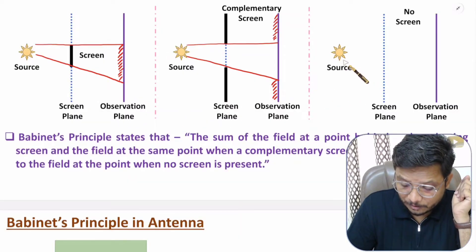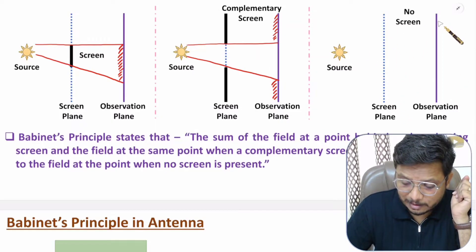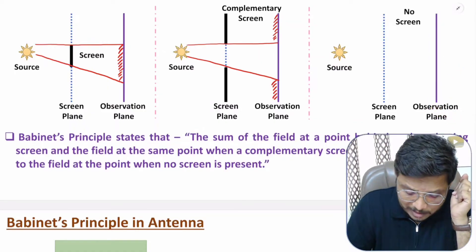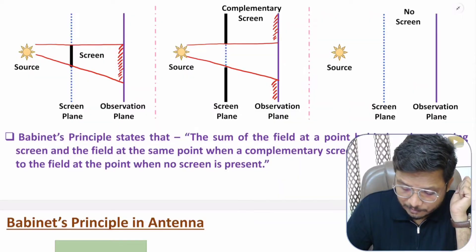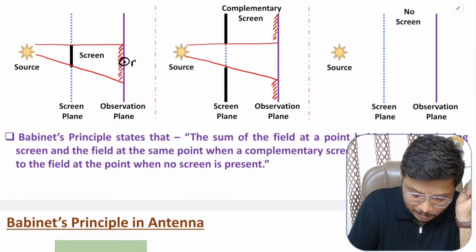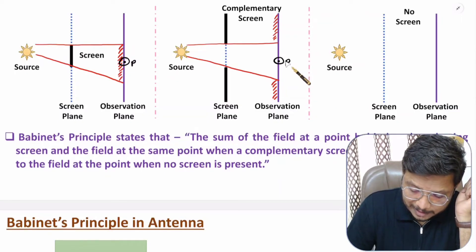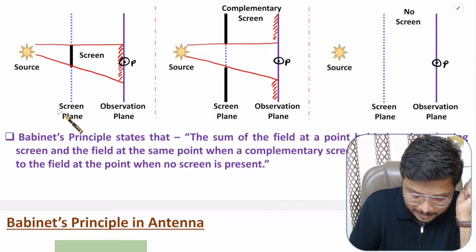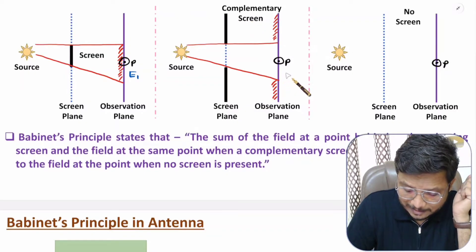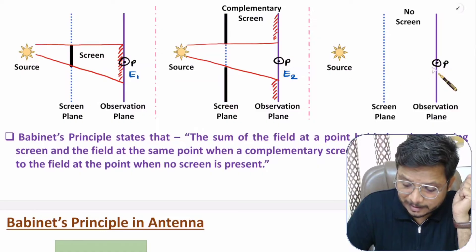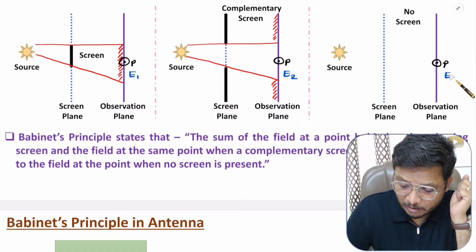In the third scenario, there is no screen at all, so light falls on the entire observation plane. With these three observations, we measure the field at a reference point P. For the first scenario with screen, the field is E1. For the second scenario with complementary screen, the field is E2. For the third scenario with no screen, the field is E.